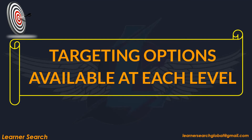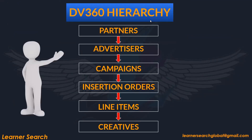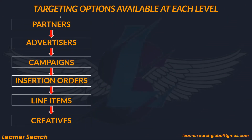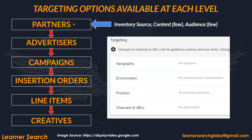Targeting options available at each level of the DV360 Hierarchy: Partners hold multiple advertisers, advertisers hold campaigns, each campaign holds multiple IOs, each IO holds line items, and each line item is associated with multiple creatives. At the Partner level, targeting categories are Inventory Source, Content, and Audience. Geography falls under Audience Targeting, while Environment, Position, and Channels and URLs fall under Content Targeting. There is no Technology Targeting at Partner level.